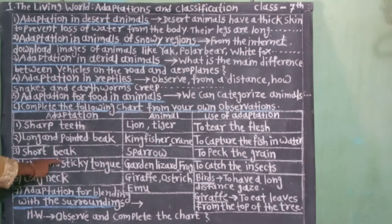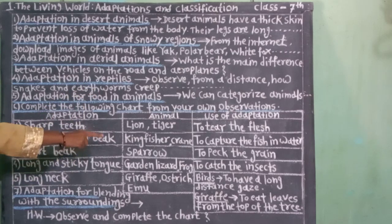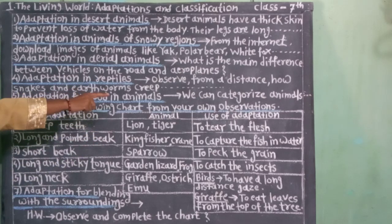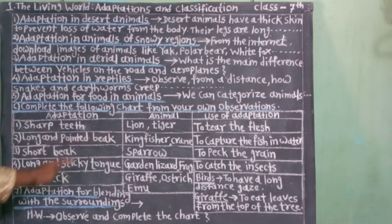जालेले अनुकुलन: लांब, चिकट जीभ. प्राणी: सरडा, बेडूक. अनुकुलनाचा उपयोग: किटक भक्षण्यासाठी.